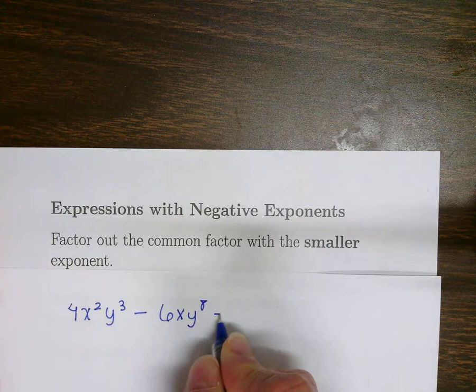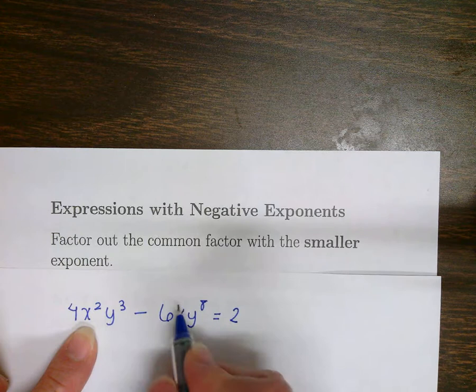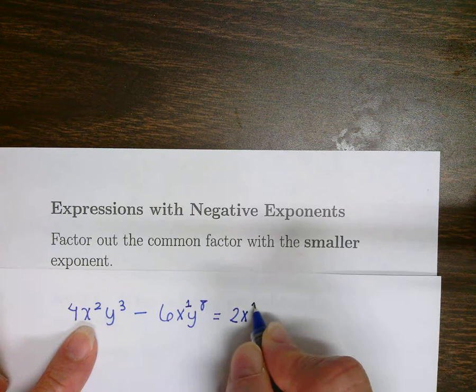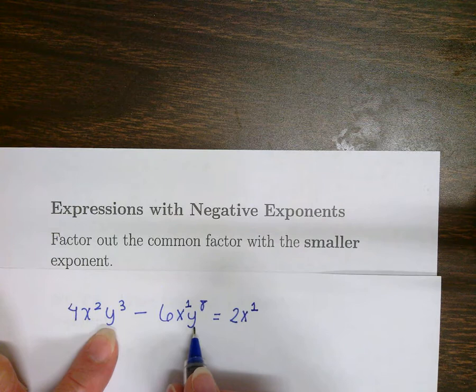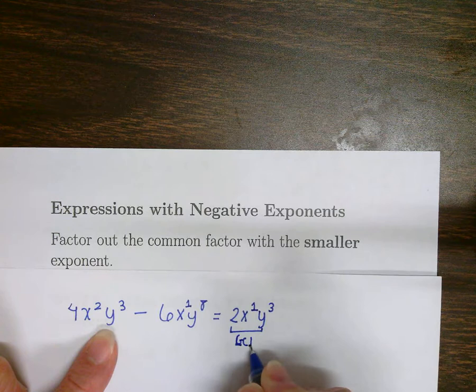What do we do? We look for the greatest common factor. Between 4 and 6, the greatest common factor is 2. For x squared and x, we have to take out the smallest power, which is x to the first. And for y cubed and y to the eighth, the only power we can pull out of both terms is y cubed. So that is our greatest common factor.